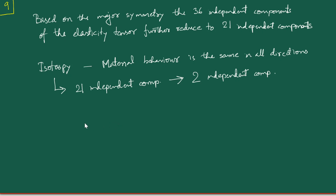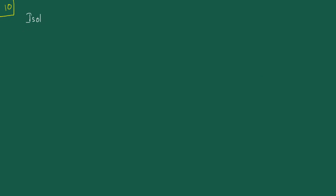For this we are going to use a result from tensor algebra. The result from tensor algebra is that any general fourth order isotropic tensor can be expressed in terms of Kronecker deltas in a specific fashion.